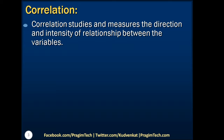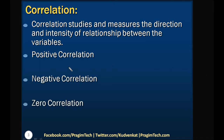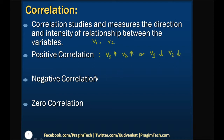We have different types of correlation. One is called positive correlation, the second one is negative correlation, and the third one is called zero correlation. If increase in one variable results in increase in another variable, or if decrease in one variable results in decrease in another variable, then we can say that the two variables are positively correlated.